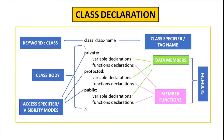The keywords private, protected and public are called the visibility modes or access specifiers. The private and protected keywords specify that all the data members and member functions declared in this section are not visible outside the class — they can only be accessed by the members of the class. However, the data members and member functions declared in the public visibility mode can be accessed outside the class, that is, by the object of the class. The only difference between private and protected visibility mode is that members of the protected visibility mode can be inherited, while members of the private visibility mode cannot be inherited.